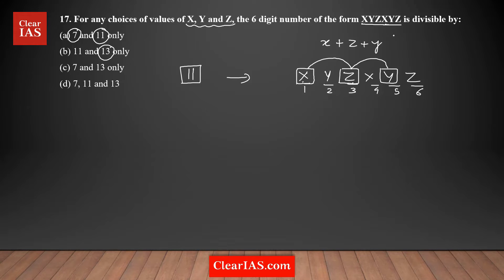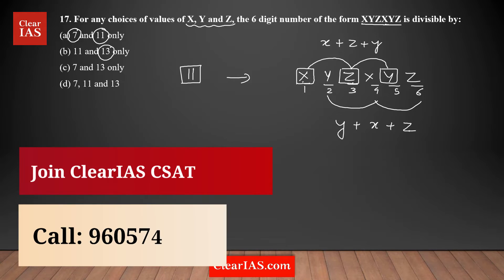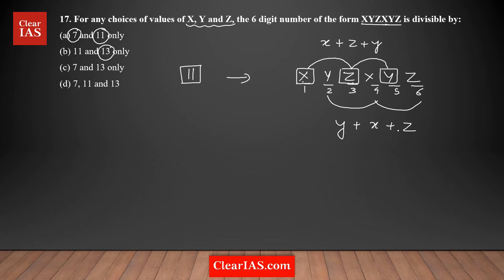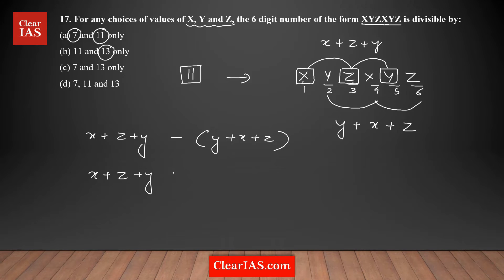Then take the sum of digits at the even positions — the remaining digits — which gives y + x + z. Now take the difference of these two sums: (x + z + y) − (y + x + z). Expanding the bracket, x cancels, y cancels, and z cancels, so the final difference is 0.